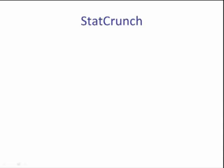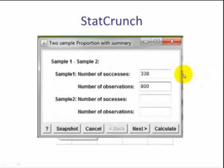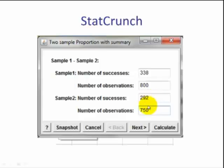Let's go to StatCrunch. We go to Stat, Proportions, two sample with summary. We enter x1, n1, then x2, n2.